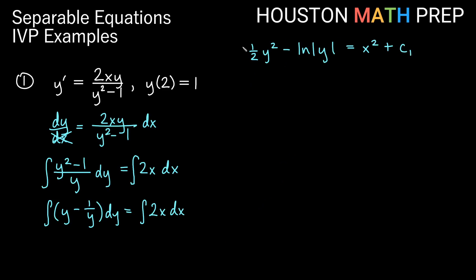Once we're here, is it reasonable to solve for y? It's really ugly — I have a y squared term and a y in a natural log. There's no way to easily get y equals in a reasonable form. So we'll go ahead and leave this implicit and just solve for our constant now, using the condition y of 2 equals 1.